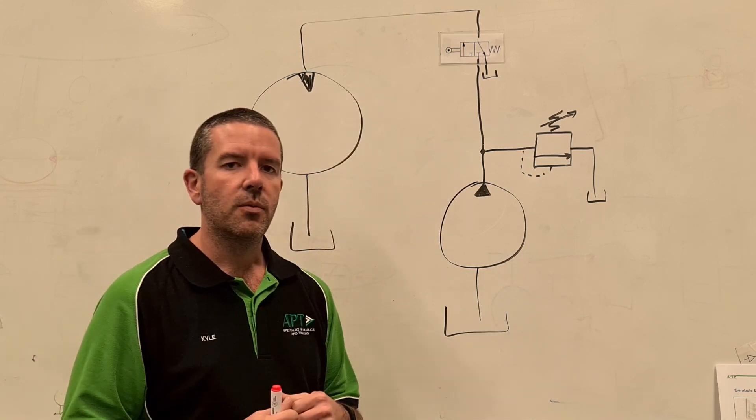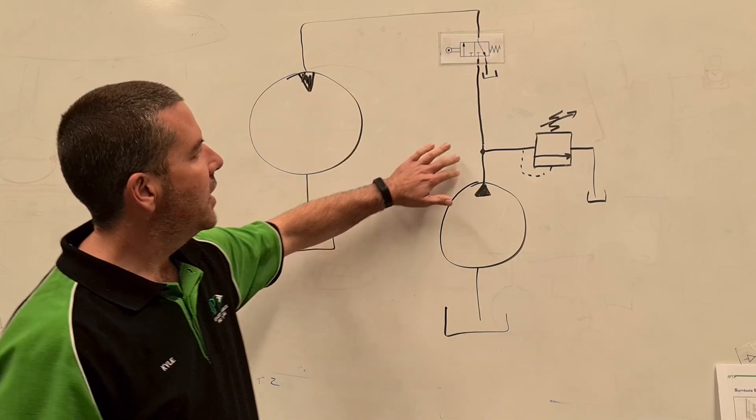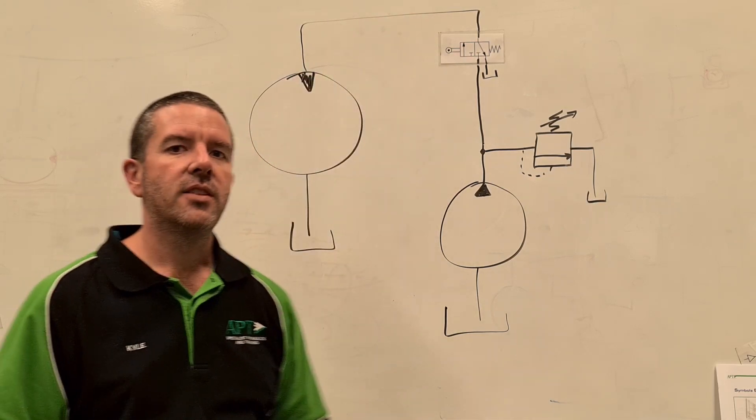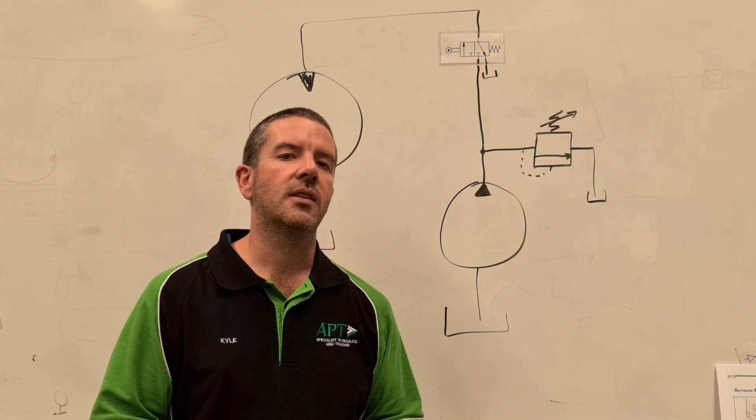A couple of things that we look at in schematics about how we form those schematics. Now the lines in between our symbols are just where the flow goes. It's just where the oil flows when we move things and when we turn things on.